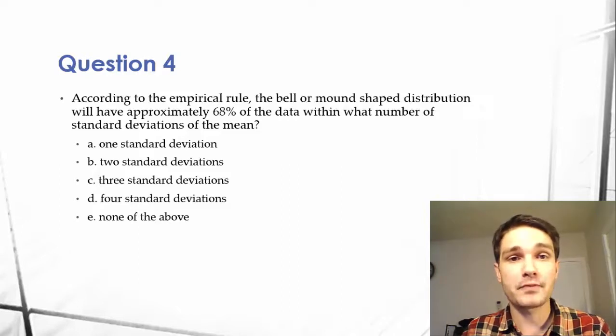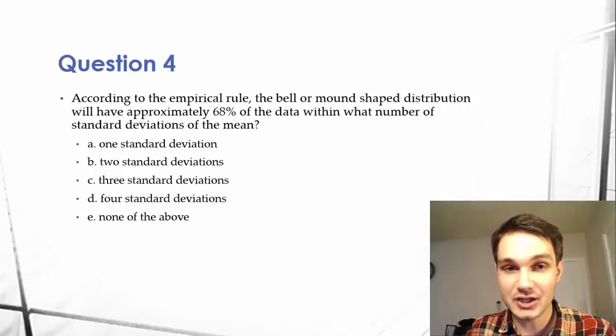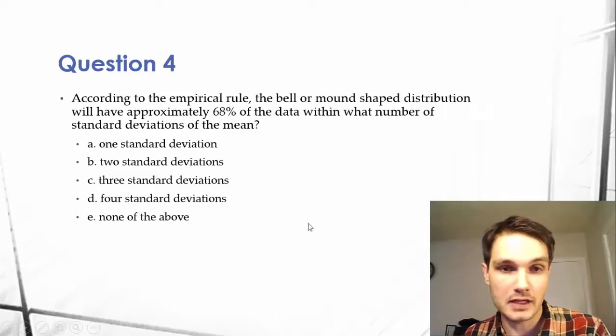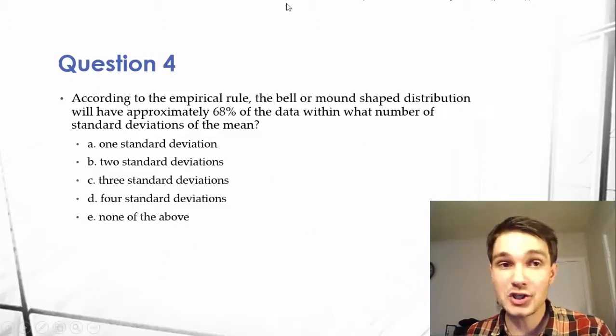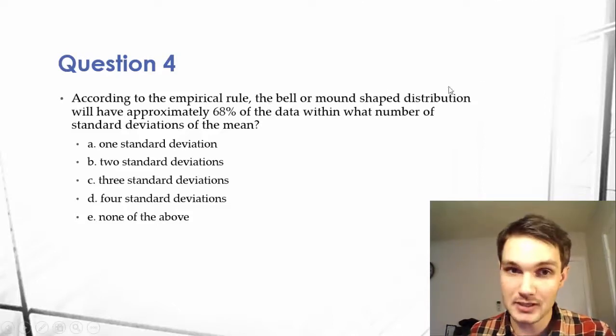According to the empirical rule, the bell or mound-shaped distribution will have approximately 68% of the data within what number of standard deviations of the mean. We have a list of standard deviations or none of the above. So this question is just asking about the empirical rule, and that is just memorization.